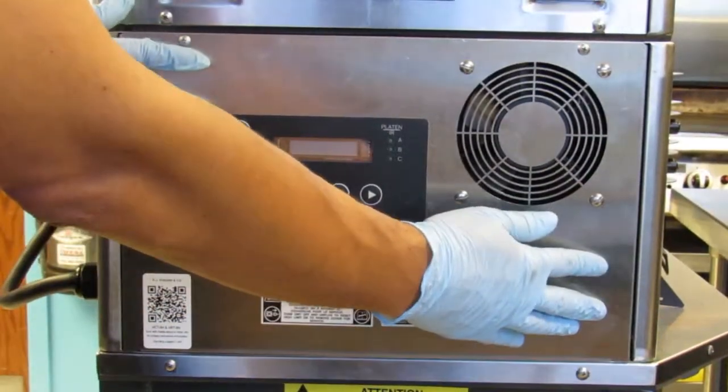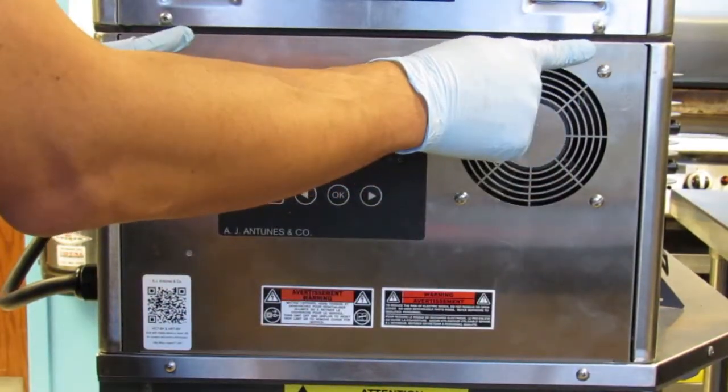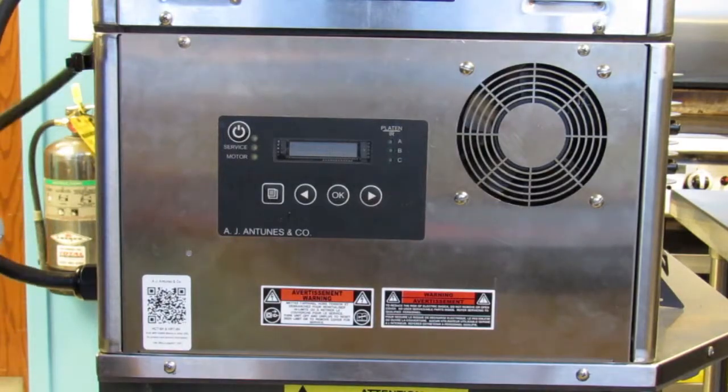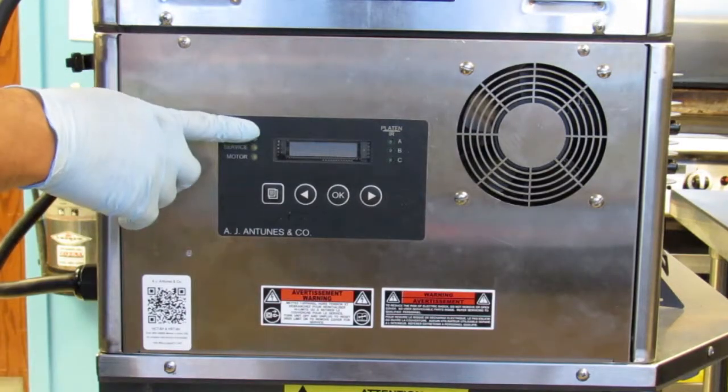With the service panel closed and secured with the two screws, plug the power cord in and turn the toaster on.